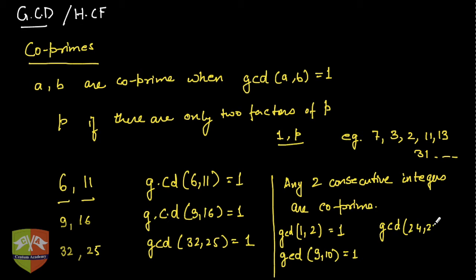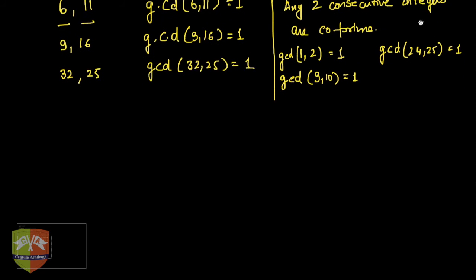gcd(24,25), both are composite but still one. So if we generalize it, we will say that gcd(n, n+1) is always one, where n is a positive integer.